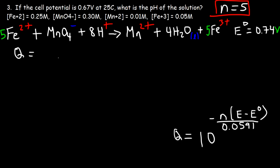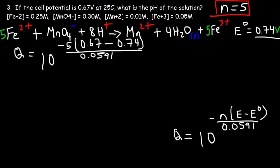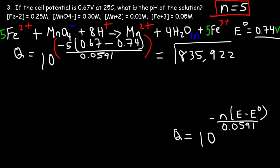Plugging in: N = 5, E = 0.67, E° = 0.74, divided by 0.0591. Computing 10 raised to that exponent — after verifying the calculation twice — gives Q = 835,922.